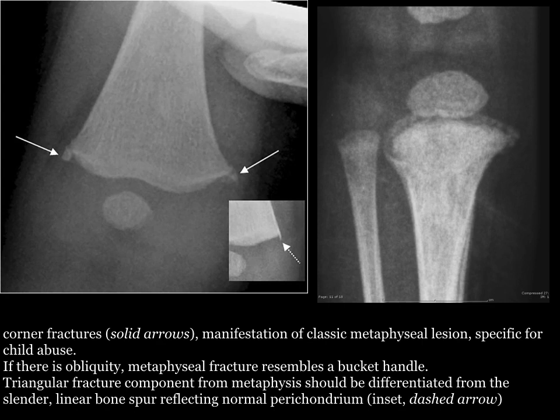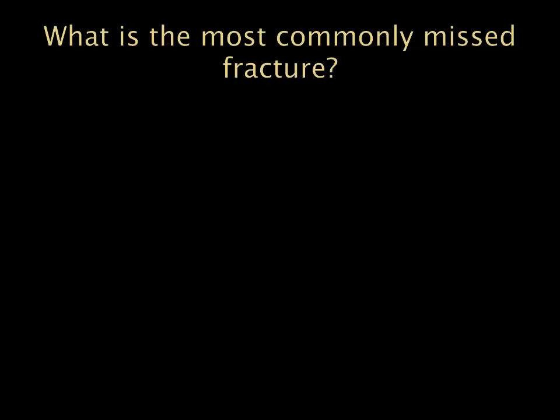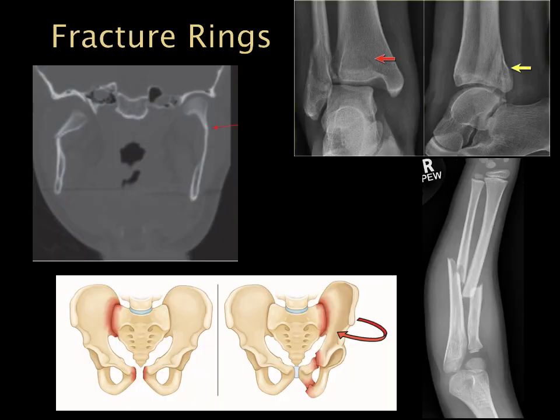The most commonly missed fracture is the second fracture — our eye jumps to the first one and we miss the second. This brings up the concept of fracture rings: in the pelvis, mandible, tibia and fibula, as well as the radius and ulna, we must think about how force is transmitted through those bones, resulting in two fractures or, if not a fracture, a dislocation.